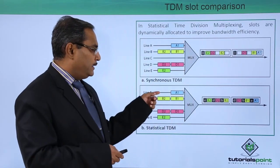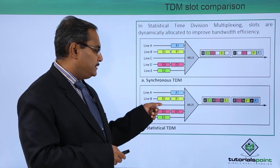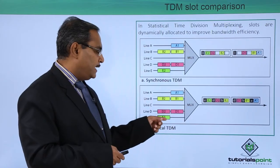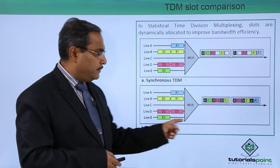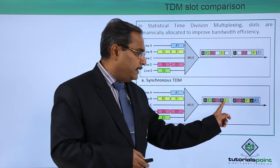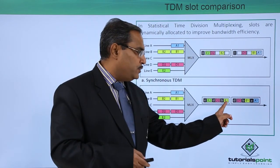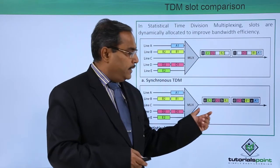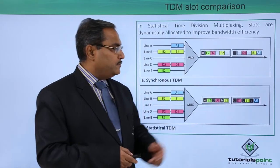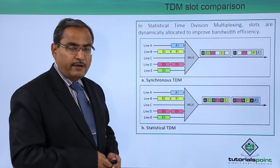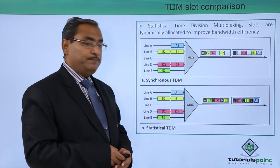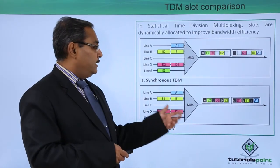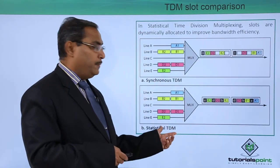In the second frame, A is missing and C is missing, so B, D, and E are present. We write B2, D2, and E2 with their respective headers. In this way, the frames are formed, and this is known as statistical time division multiplexing.